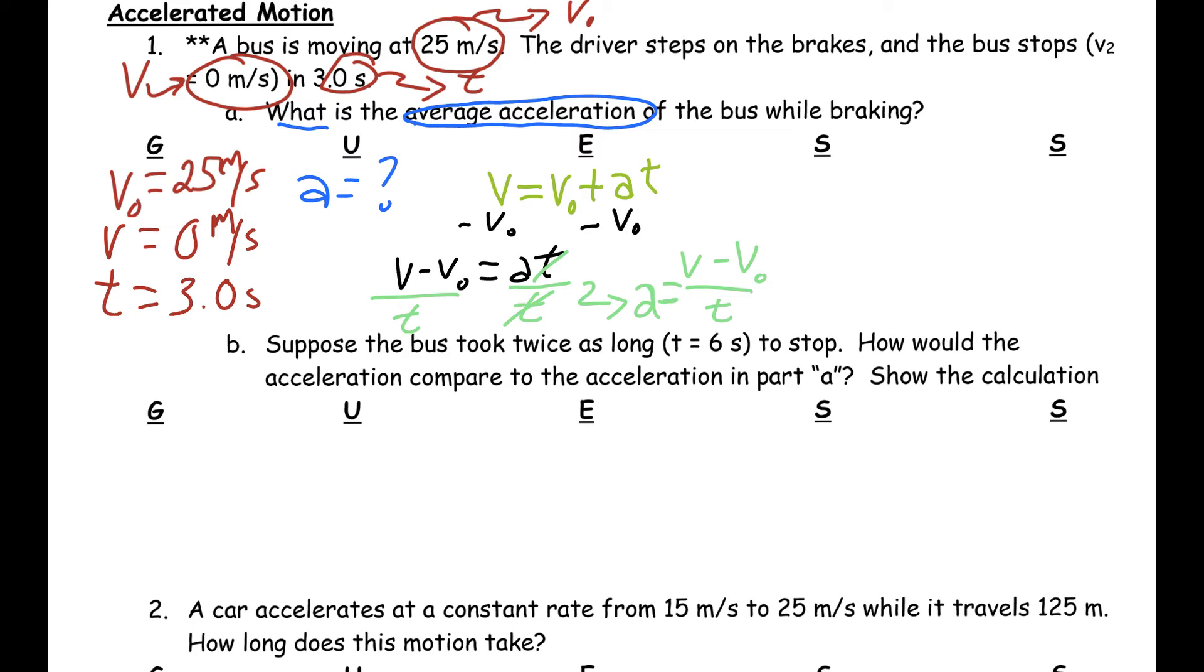My next step involves substitution. So, all I'm going to do is I'm going to take these values that are over here. So, 25 is going to go here, 0 is going to go here, and 3 is going to go here. So, I plug those values into my equation, and I see that acceleration equals V, which is 0, minus 25, divided by 3. And this is meters per second, and this is in seconds.